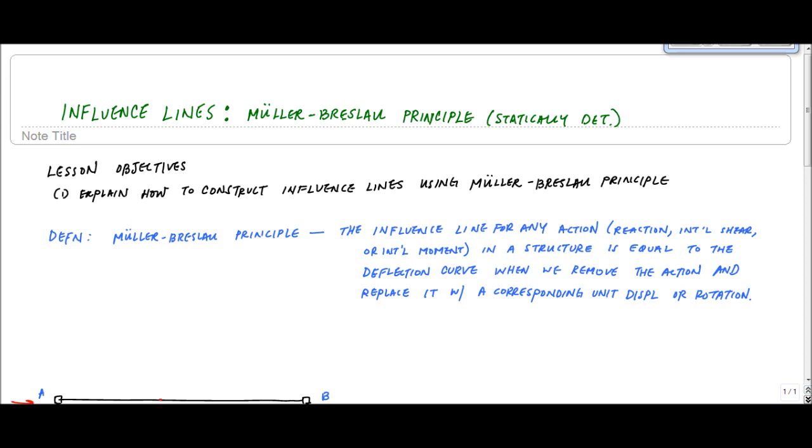It's a graphical technique. And the influence line for any action, essentially here, this is the statement. I got this from Gali and Neville, some old-school structural analysis book from when I was a grad student. The influence line for any action—reaction, internal shear, internal moment, whatever—in a structure is equal to the deflection curve when we remove the action and replace it with a corresponding unit displacement or rotation.